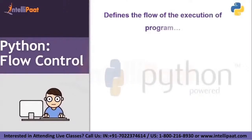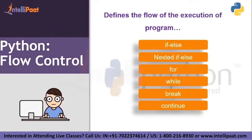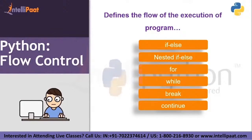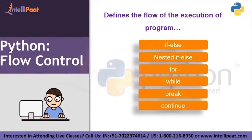Python flow control. These flow controls are the ones which control the flow of execution of your program. We have six different types of flow control in Python: if-else, nested if-else, for, while, break, and continue. Let's discuss them one by one, starting with if-else.